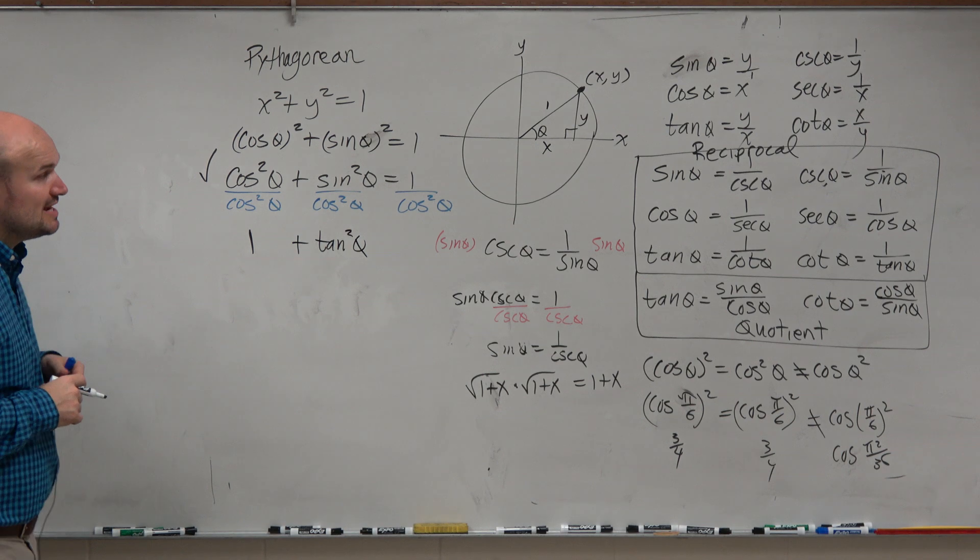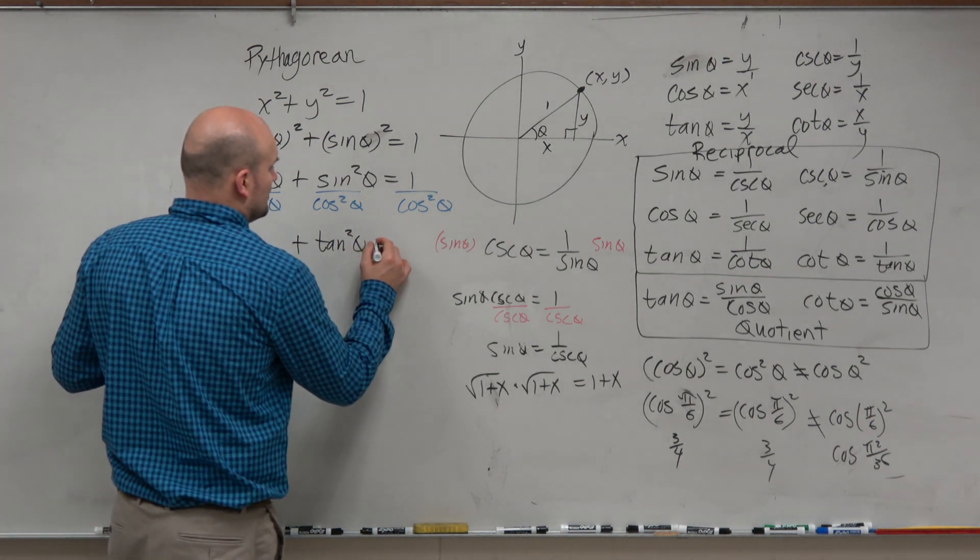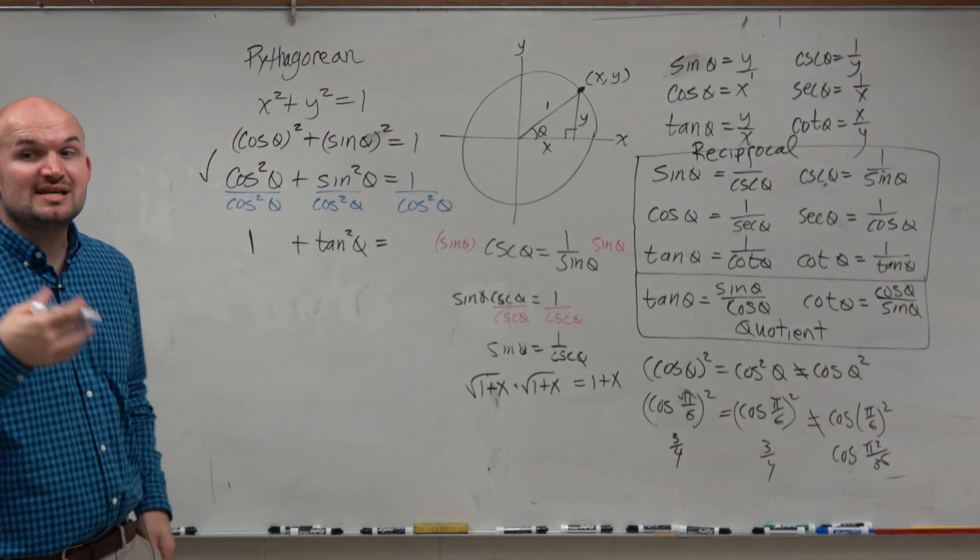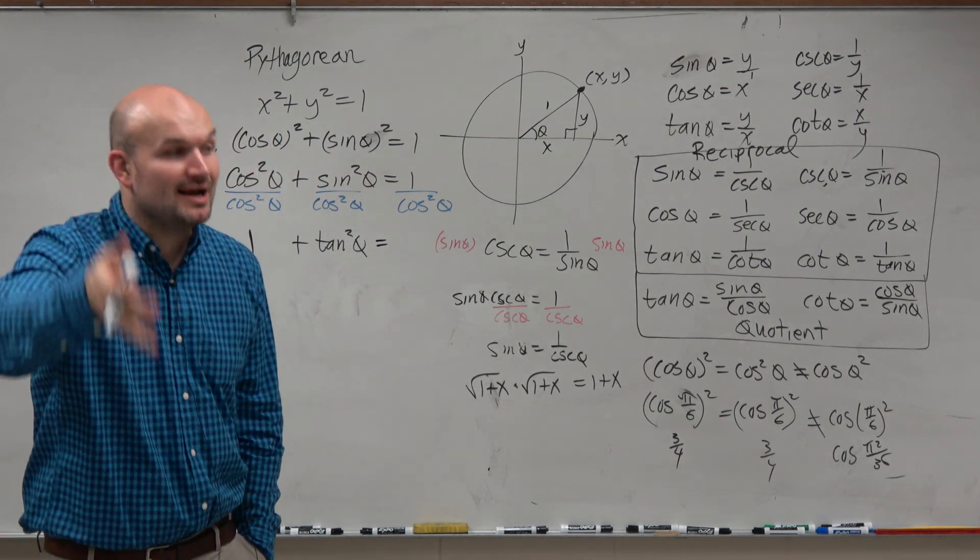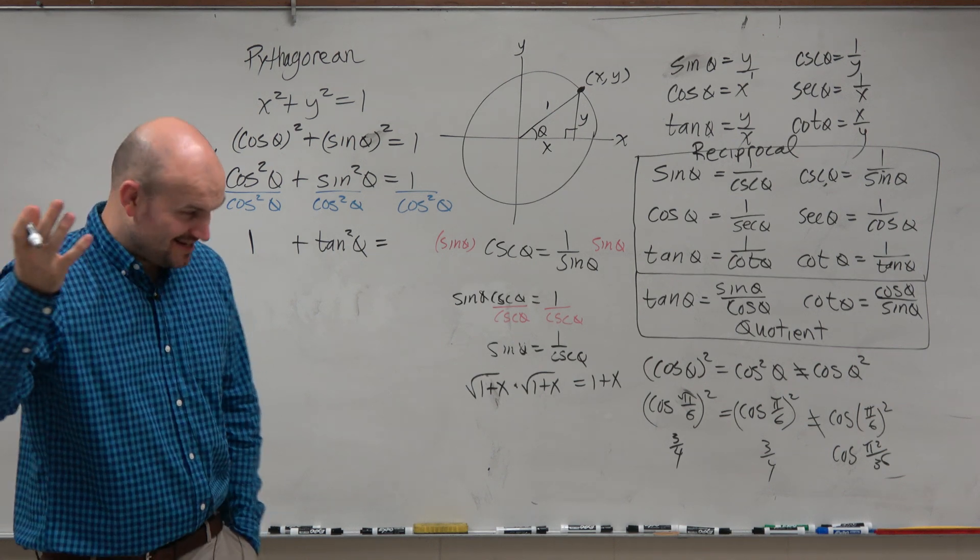And 1 over cosine of theta is secant. So 1 over cosine squared of theta would be secant squared. So 1 over cosine squared of theta would be secant squared.